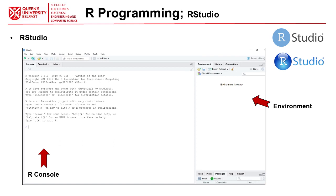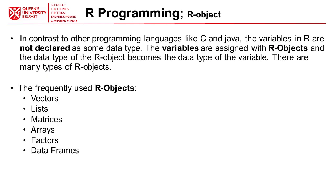The last point is that we don't need to declare any variable in R. You can easily use any variable directly in your source code. Variables are all a kind of R object. These R objects could be vectors, lists, matrices, arrays, factors, and data frames.